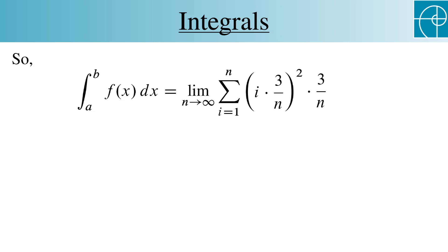this equals the limit as n goes to infinity of 27 over 6 times n times n times n plus 1 times 2n plus 1 all over n cubed. We can treat this in exactly the same way we would treat the same expression involving an x instead of an n.